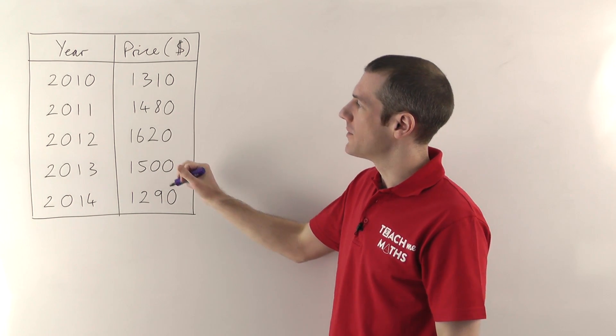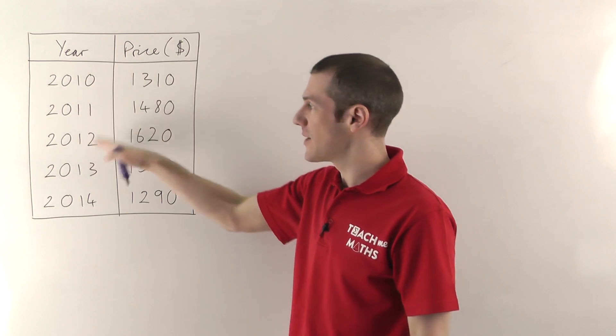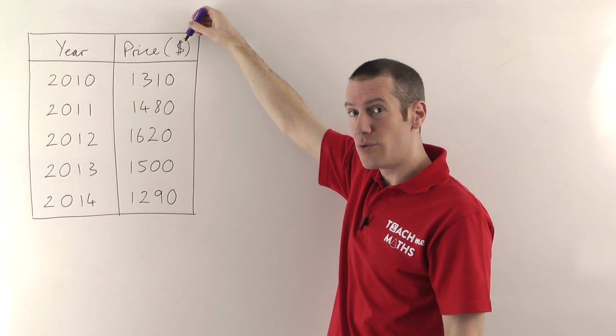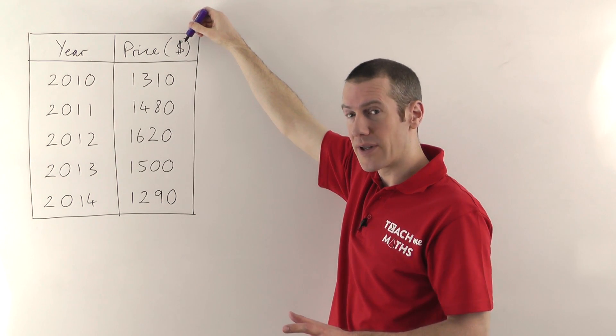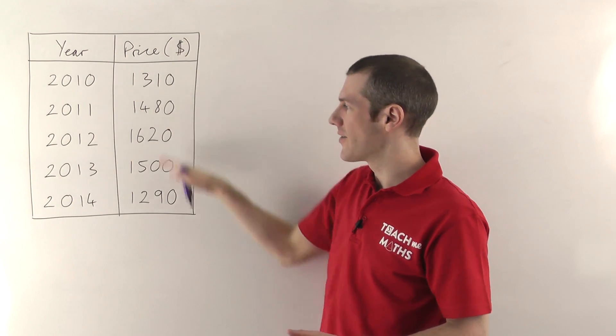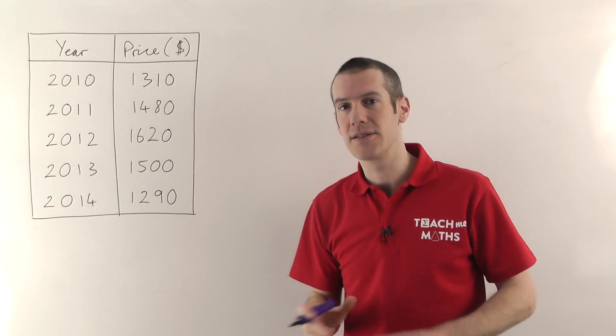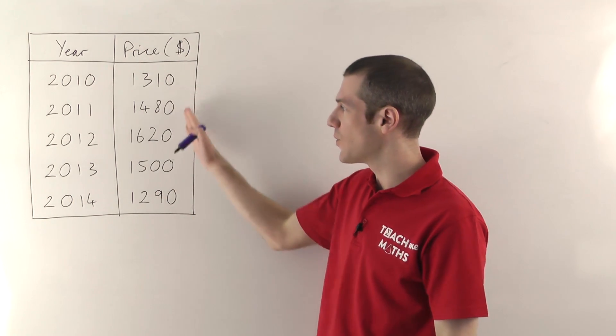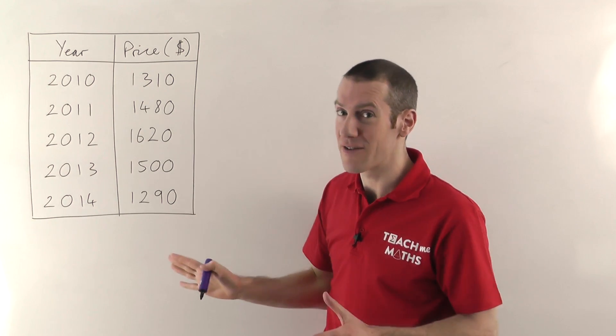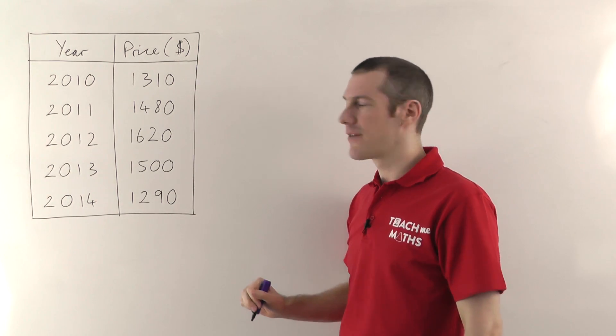But it's very important with a frequency table that the column titles say what's in them, but you also say what the units are. The units are really important here. The fact that this is US dollars rather than pounds is very important, because if these were pounds, the price would be very different. We'll come back to that when we talk about the line graph.